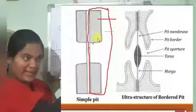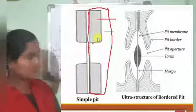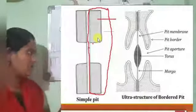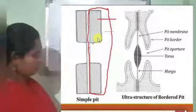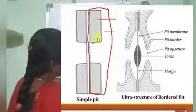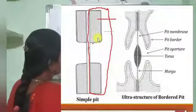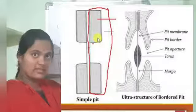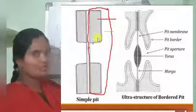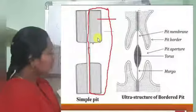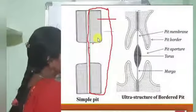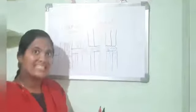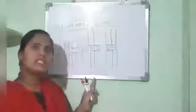Based on their formation, pits are divided into two types. The first type is the simple pit. In a simple pit, the width and length of the pit chamber are equal. If a pit or pit chamber has equal length and equal diameter, then we consider it as a simple pit.